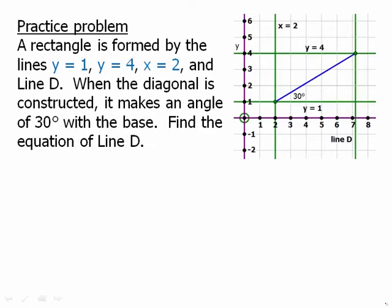Here's a practice problem. A rectangle is formed by the lines y = 1, y = 4, x = 2, and line D. When the diagonal is constructed, it makes an angle of 30 degrees at the base. Find the equation of line D. So I'm going to suggest that you pause the video, work on this, and then we'll talk about this.